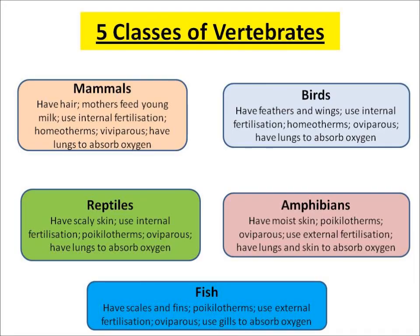Mammals are covered in hair and they feed on their mother's milk. Fertilization happens internally, so the sperm meets the egg inside the female. Mammals are homeotherms, so they're warm-blooded, which means they keep their body temperature the same. They are viviparous, which means the mothers give birth to live young, and they have lungs to absorb oxygen.